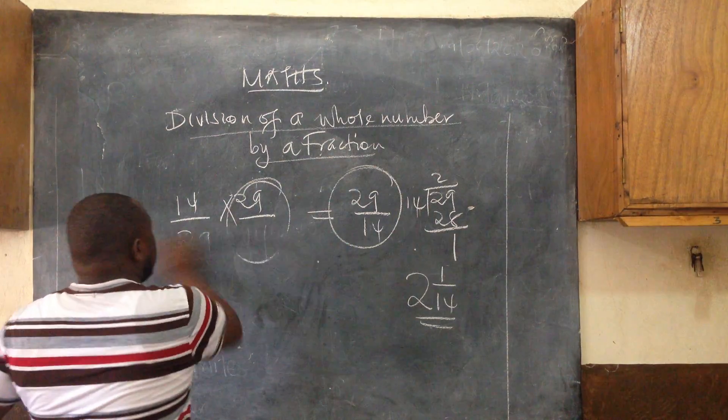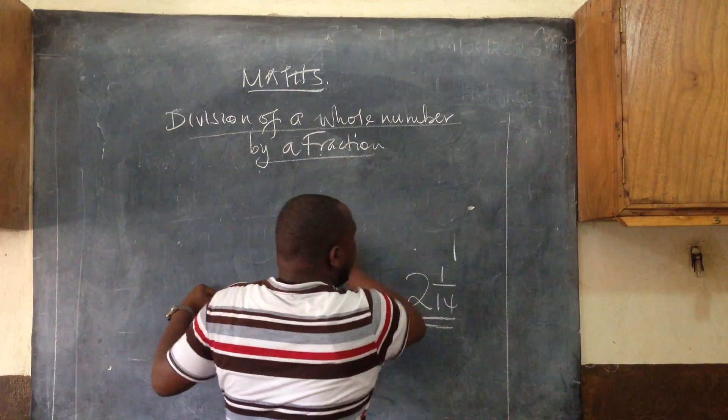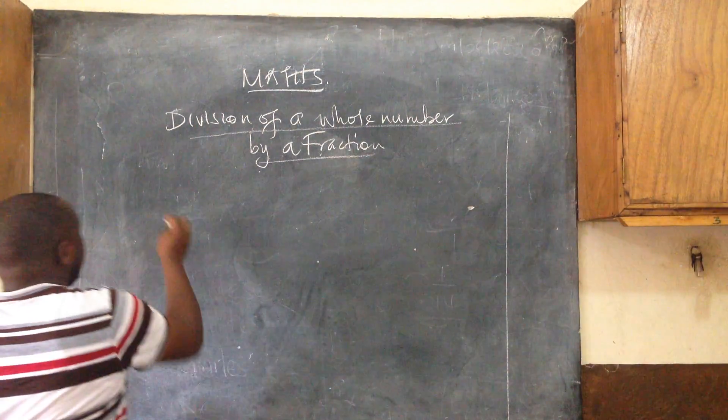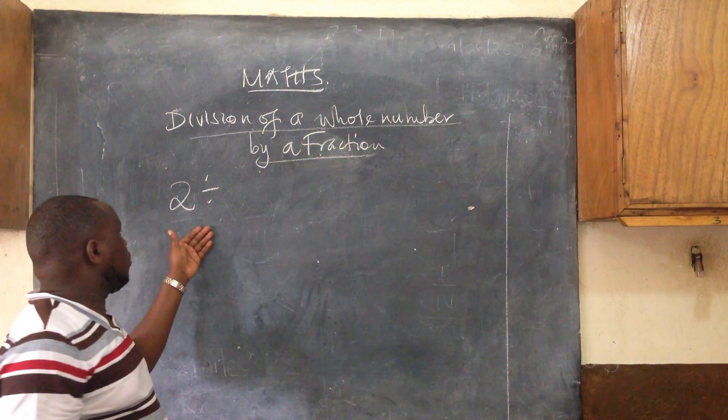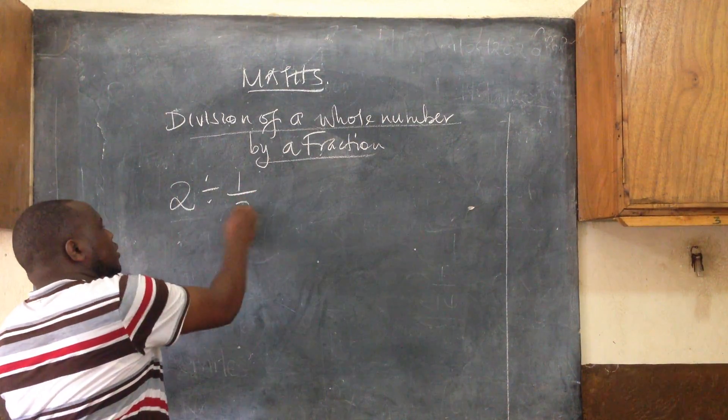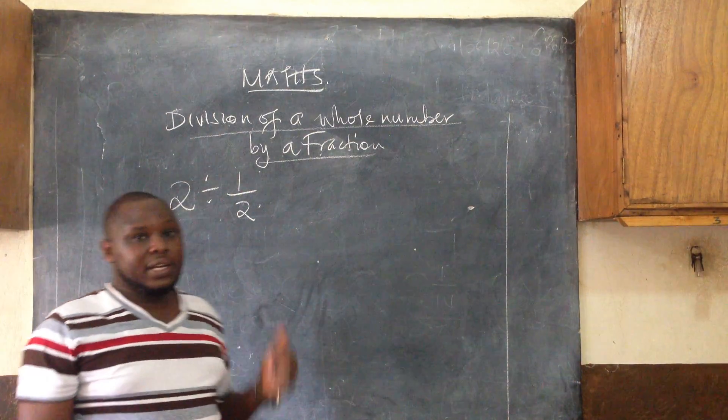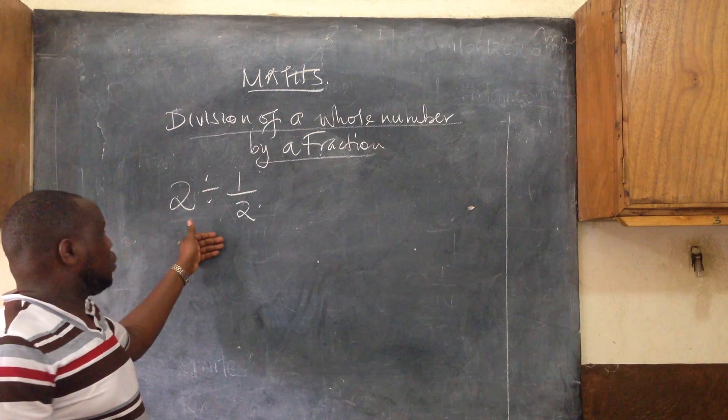Today we are going to discuss the division of a whole number by a fraction. I will give you examples so you can understand what we are doing. For example, 2 divided by 1/2. Remember, we are using the reciprocal concept that we just did in our previous lesson.